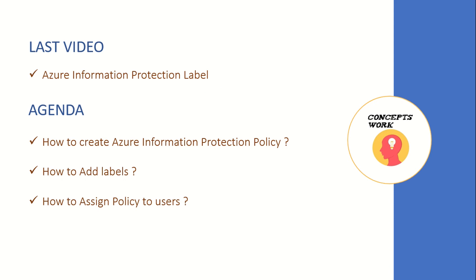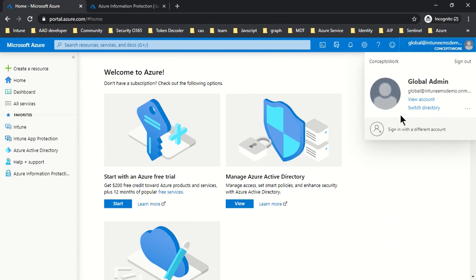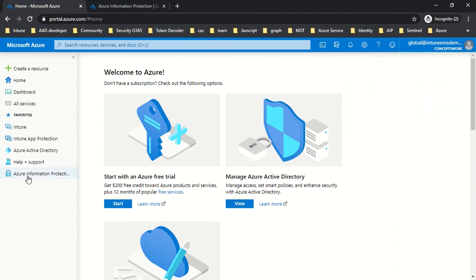The agenda of this video will be knowing how to create an Azure Information Protection policy, how to add different labels to a particular policy, and how to do scoped or departmental deployment. Since this will be a complete lab demo session, I'm going to switch to my browser where I have signed in as global admin.